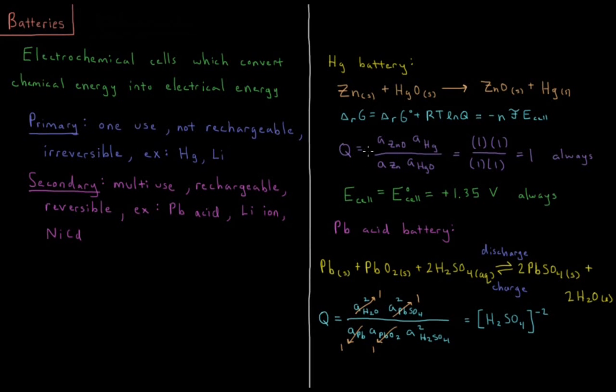The reaction quotient here is equal to the products to the power of their stoichiometric coefficients, divided by the activity of the reactants to the power of their stoichiometric coefficients. In each case here, the stoichiometric coefficient is 1, so all powers are to 1. We have the activity of zinc oxide times the activity of mercury divided by the activity of zinc times the activity of mercury oxide. In all cases, these are all solids, and as long as the pressure is sufficiently close to 1 bar and doesn't change dramatically during the reaction, then the activity is going to remain constant for these solids and is going to be assumed to be 1.